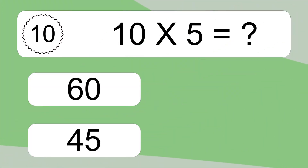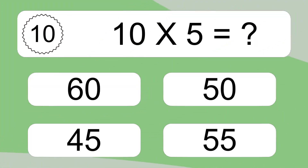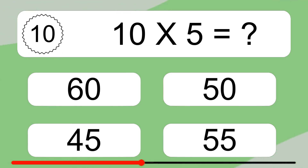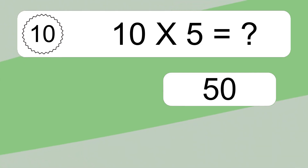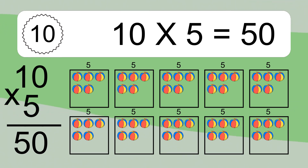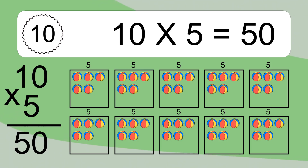10 times 5 equals what? 10 times 5 equals 50. We have 10 boxes, and each box has 5 colorful balls inside. If you count all the balls in all the boxes together, you will have 10 times 5 balls. This equals 50 balls.